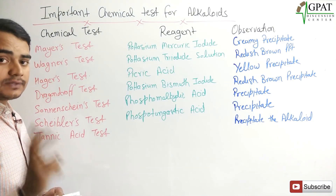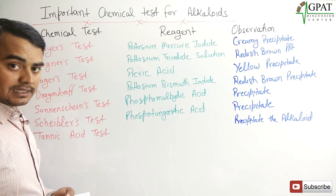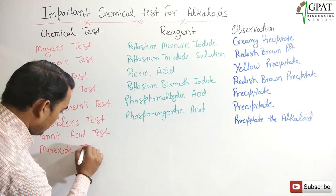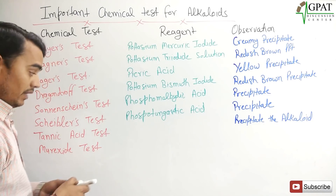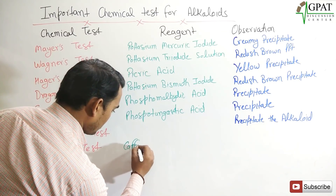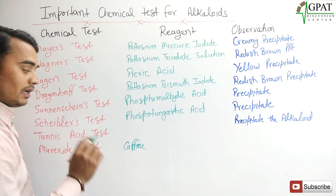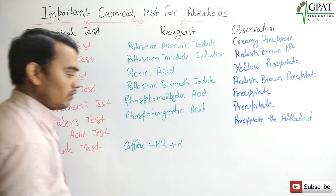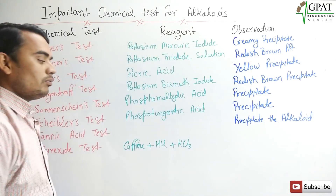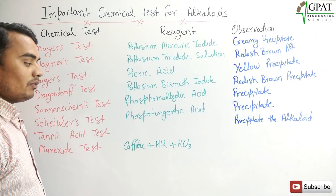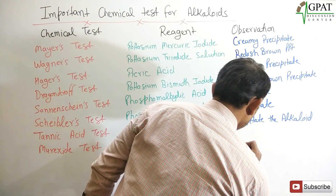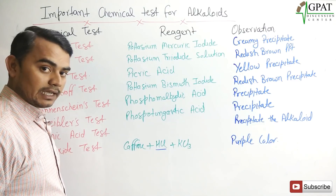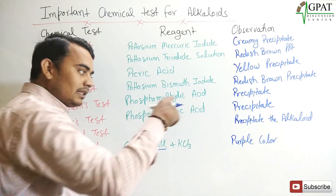The next two tests are for individual or class-specific alkaloids. The first is the murexide test, which is a very important test for exam preparation. The murexide test is mainly for caffeine. We add HCl and chloroform, along with potassium chloride. The observation is a purple color. Remember: when we add HCl, the medium is acidic, and in acidic medium we get purple color. But when we add any alkali, this color is lost.